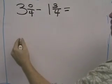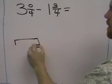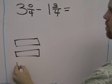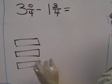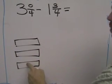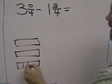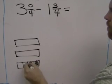What you can do is think of 3 and 0 fourths as 3 wholes: 1 whole, 2 wholes, 3 wholes. And we can take this last whole here and turn it into a fraction. We would turn it into 4 fourths.